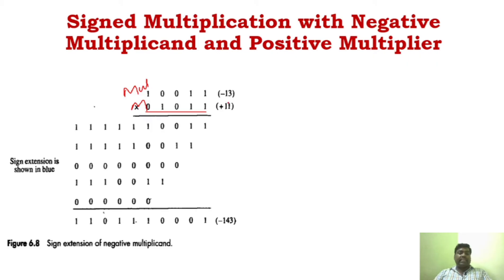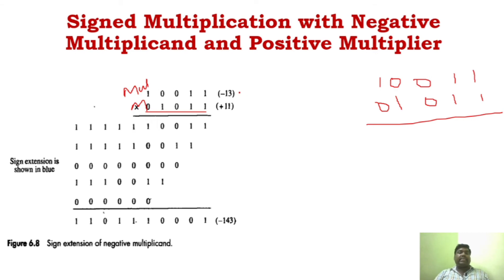In signed multiplication, what we have to do is check the sign of the multiplier and multiplicand, and extend the sign bit. Before explaining it, I will just explain separately so that you can understand clearly. I am taking the same multiplicand — it is minus 13. The number is given directly as minus 13, which is nothing but the 2's complement of 13. Now we have to multiply it. Before this, let's see a small normal multiplication example. Consider triple 1 times triple 1.